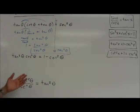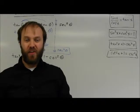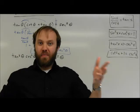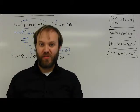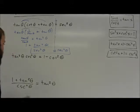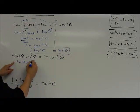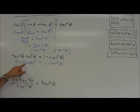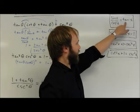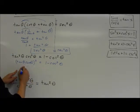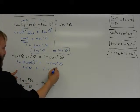Second example. On most of these problems, I'm going to choose to start on the most complicated side and work towards something more simple. I'm not saying you can't take something simple and try to match the other side, but I think you'll find that's harder in most cases. In this case, I know this is the same thing as tangent of theta times cosine of theta, the whole quantity squared. And tangent times cosine — if I look at my identities and multiply both sides by cosine — tangent times cosine is sine.